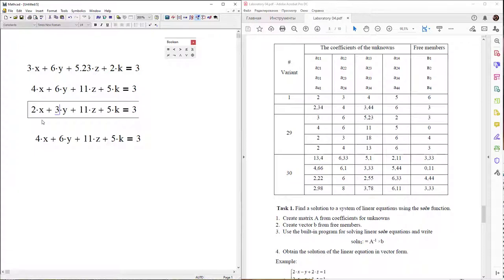2x + 3y + 18z + 6k = 0. Oh sorry, 3, 0. In this way: 2x + 4y + 13z + 6k = 3. In this way.